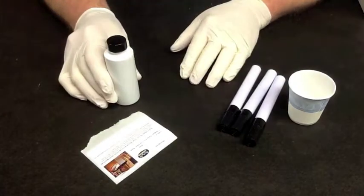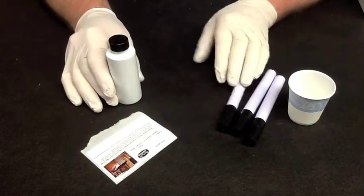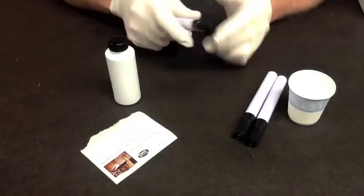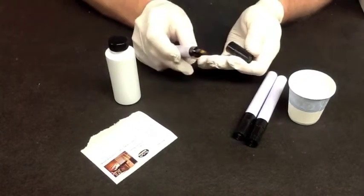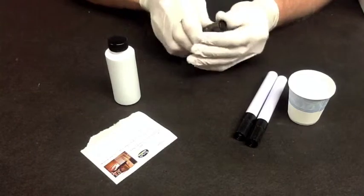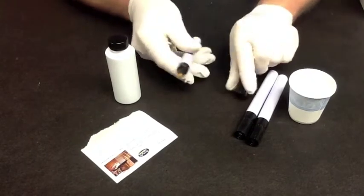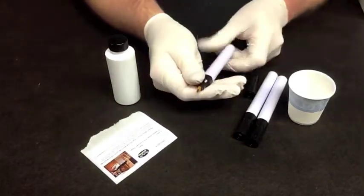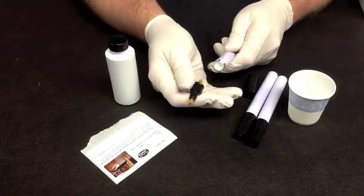This segment we're going to demonstrate how to fill the felt refillable markers. We're going to pull the cap off, then unscrew the top off of the barrel.